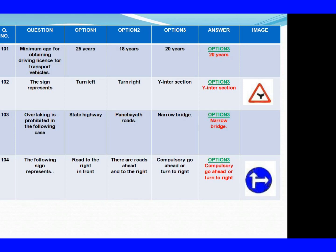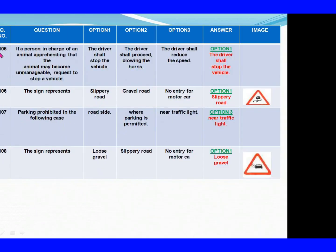Question 105: When an animal on the road may become unmanageable, request to stop a vehicle. Option 1: The driver shall stop the vehicle. Option 2: The driver shall proceed blowing the horn. Option 3: The driver shall reduce the speed. The right answer is Option 1: The driver shall stop the vehicle.